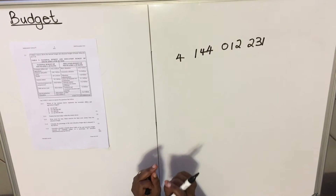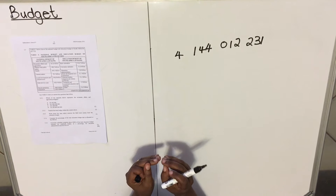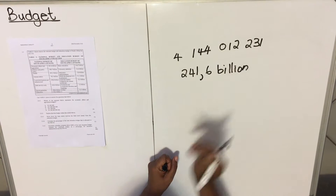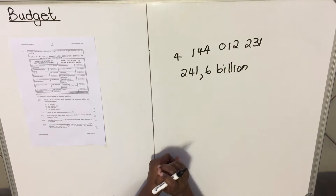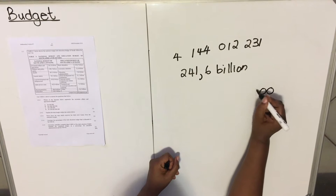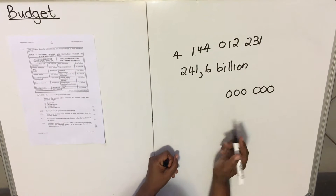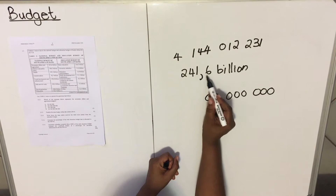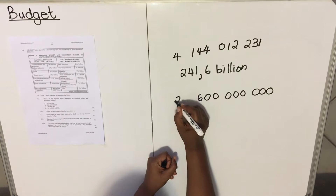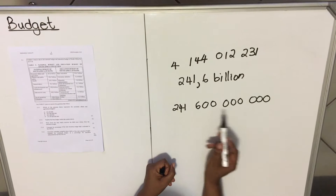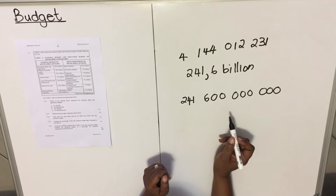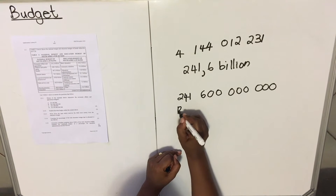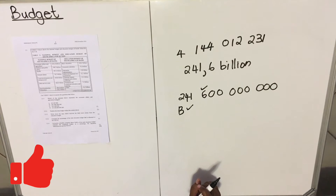This will help you answer question 2.3.1. The economic affairs amount is 241.6 billion. I know that billions have one-two-three digits for hundreds, one-two-three for thousands, and one-two-three for millions. Because it's 0.6, I don't only have billions — I have millions as well. So the 6 represents 600 million. The answer is 241 billion 600 million, which is option B. You may write the full number or just write B — you get a mark for each.